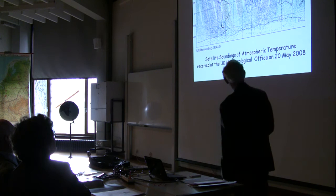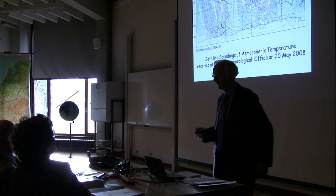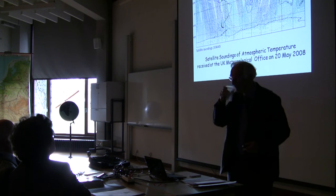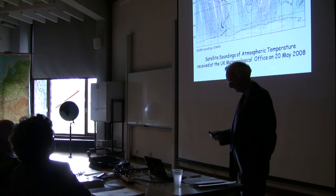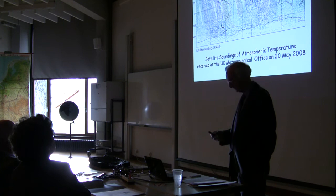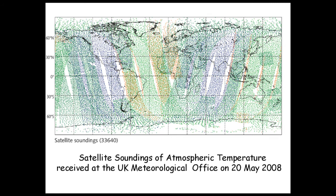The measurements of the lower atmosphere, to be useful, have to be very accurate. The remote sounding of temperature from space is routine now in all meteorological services around the world. This is the UK Meteorological Office getting its data in — 33,000 separate soundings of temperature taken with microwave radiometers, though for a long time it was infrared ones. Now we have microwave ones doing it, retrieving the temperature structure across the whole world from space every day.